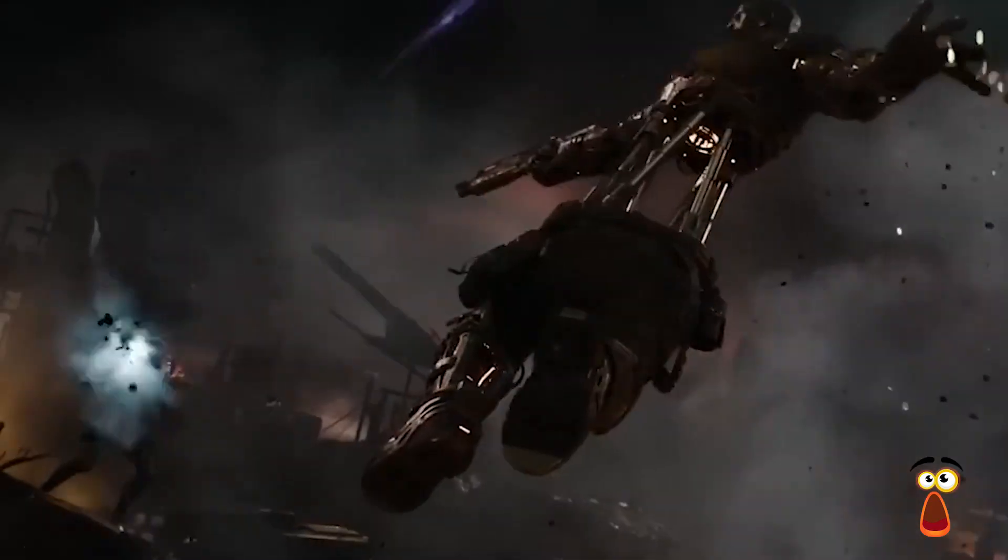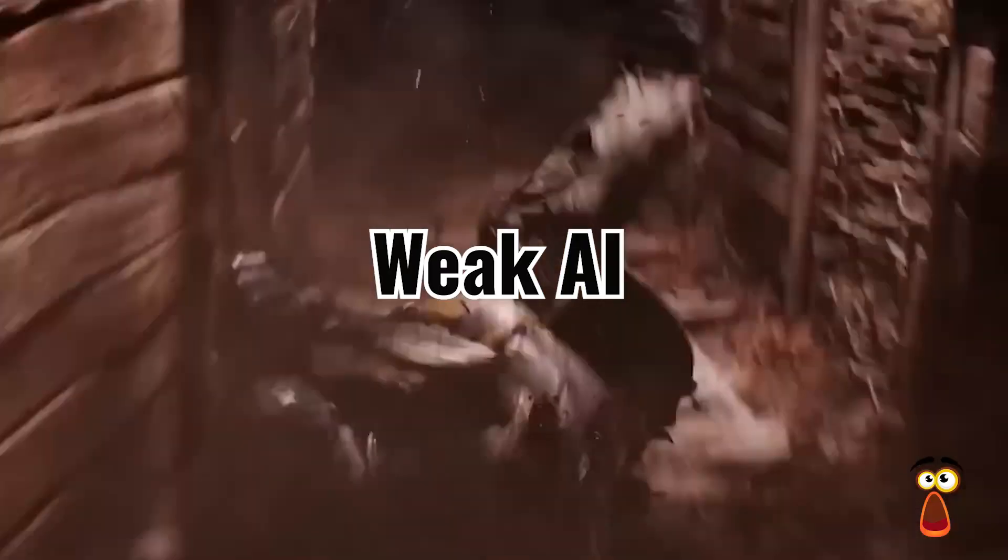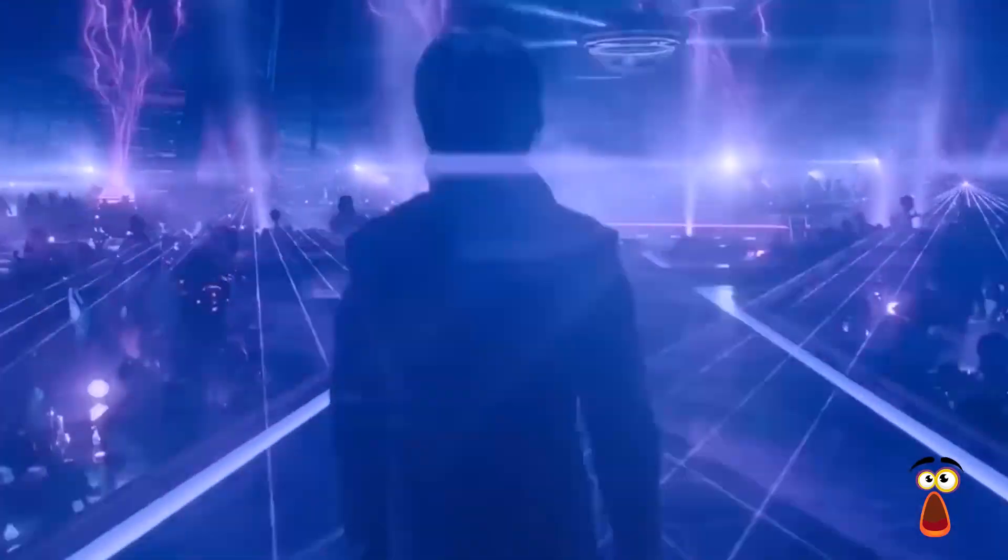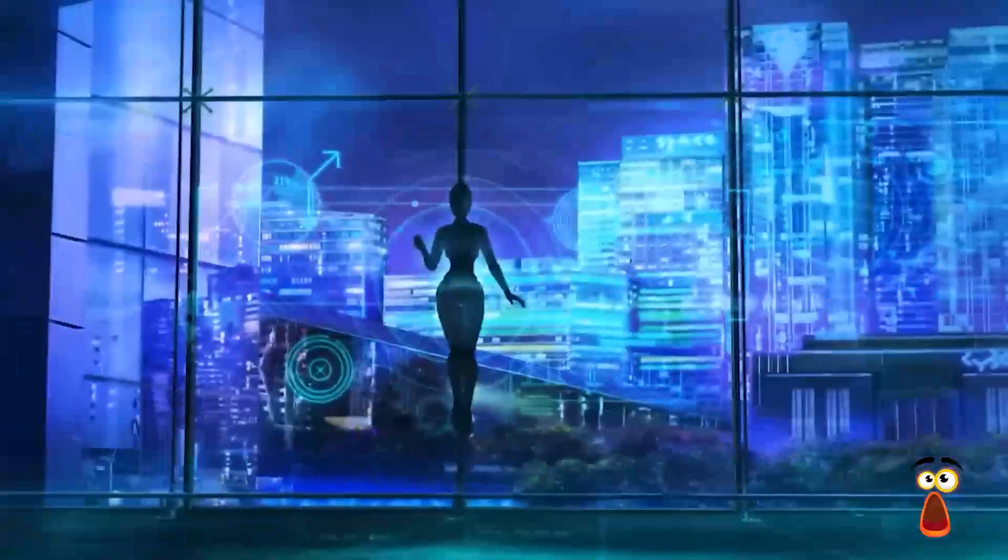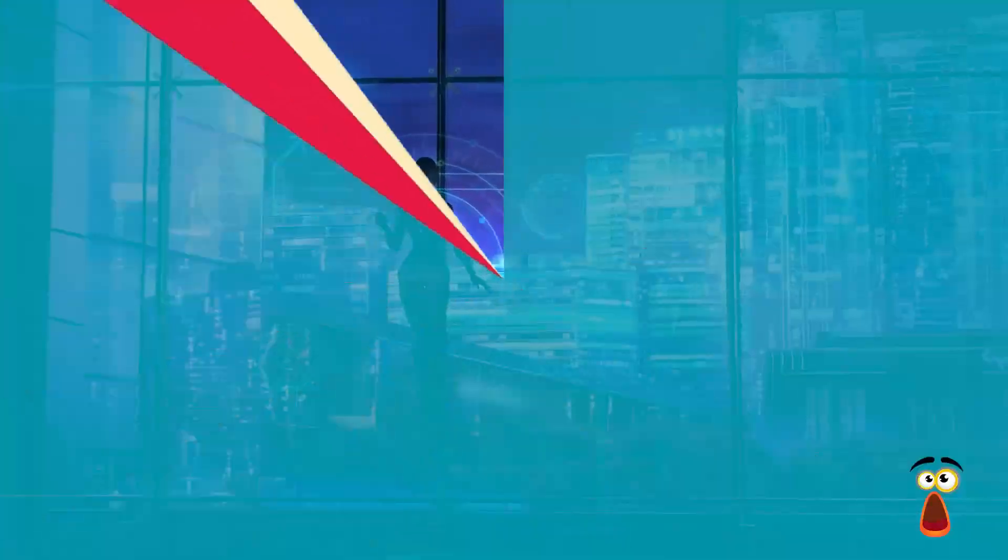Basically, AI can be categorized as weak AI and strong AI. Weak AI, also named narrow AI, is the type of artificial intelligence that is created and trained for a particular task, and they're limited to a specific area.